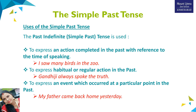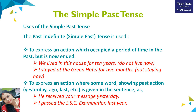Number three, to express an event which occurred at a particular point in the past. For example, 'My father came back home yesterday.' Here, 'yesterday' is showing a particular point in the past, so this sentence is in simple past tense.